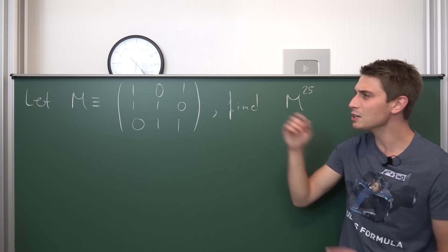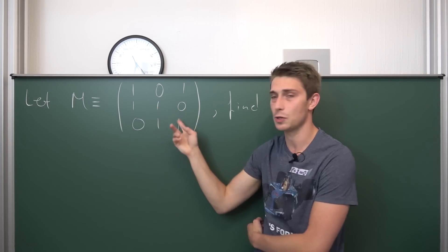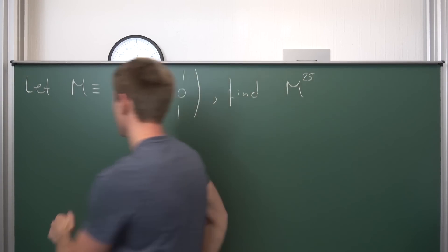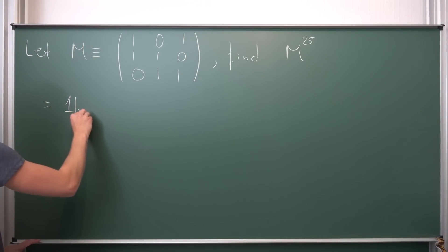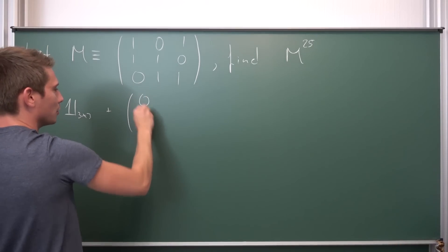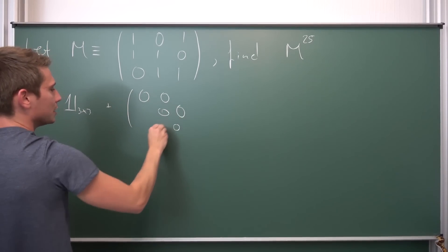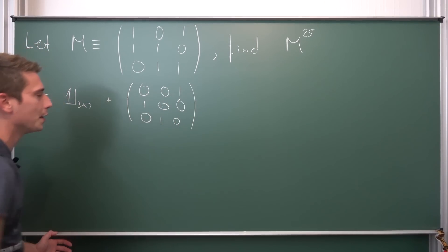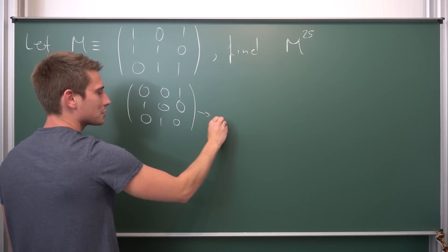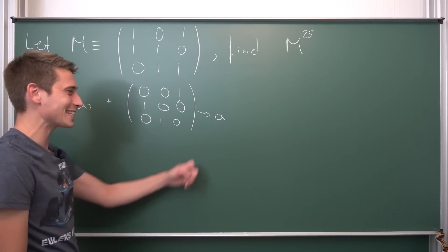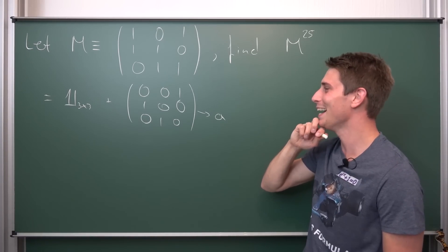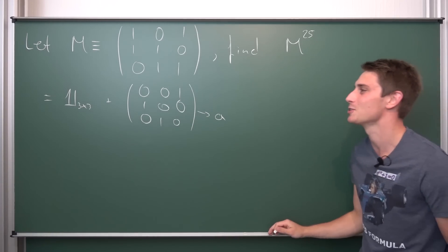My initial thought was: we have the identity matrix hidden in here in three dimensions, so why not rewrite our M as the addition of two things? Namely, this is the identity matrix in three dimensions plus - what else do we have left? On the main diagonal zeros, then zeros elsewhere, and on all the other entries we have a one. We are going to call this matrix small a. This is really cursed notation if you ask me - not using capital letters for a matrix. That is really cursed. Uncomfortably cursed math memes.